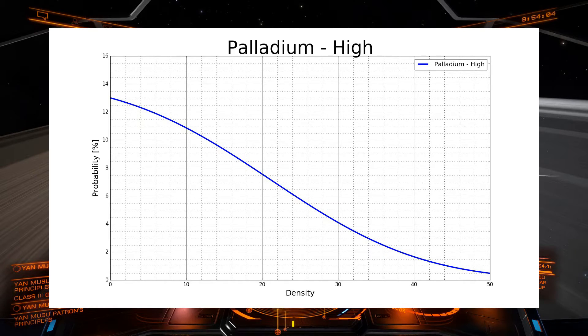So if I, for instance, wanted to know what is the chance that I would get a rock that contained 20% or more, I would look at the x-axis at 20%, go up and see that line crosses at around 7.5%. So that's a 7.5% chance that I would get a density higher than 20% when mining in a high density ring for palladium.